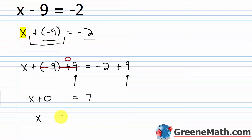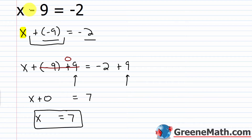So I get x equals 7 as my solution. To check, plug 7 in for x in the original equation: 7 minus 9 equals negative 2. The left side simplifies to negative 2, and the right side is negative 2 — the same value on both sides. So x equals 7 is correct.